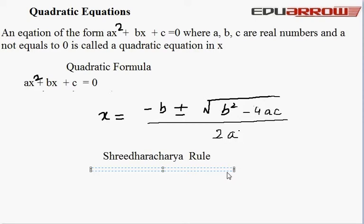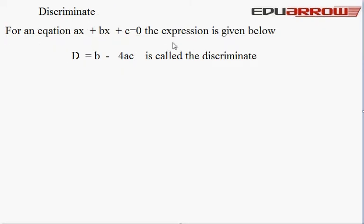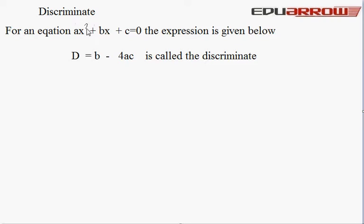Now we read about the discriminant of a quadratic equation. For a quadratic equation ax² + bx + c = 0, the expression D = b² − 4ac is called the discriminant.